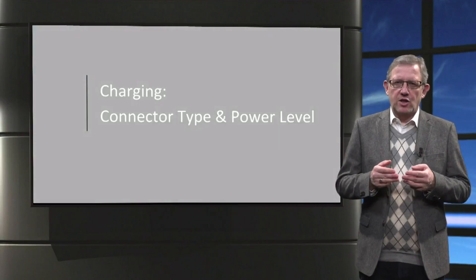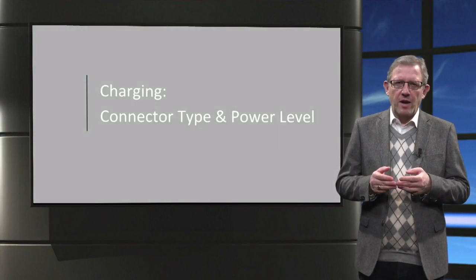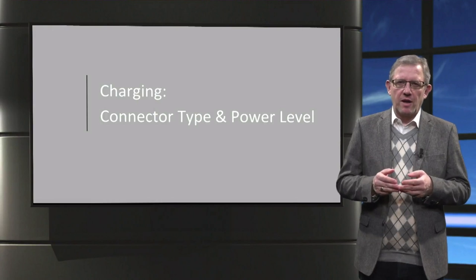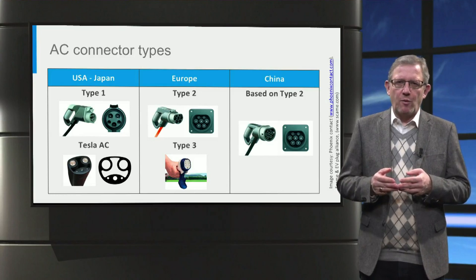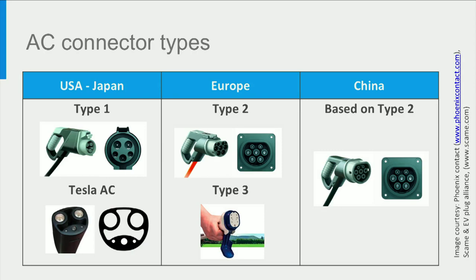AC and DC charging are characterized by the connector type and the charging power levels that can be reached. For AC charging, the Type 1 connector is commonly used in the United States and Japan, while Type 2 and the less common Type 3 connectors are used in Europe. Tesla uses its proprietary connector in the USA and Japan, while it uses the Type 2 connector in Europe. Other parts of the world are often adopting the Type 2 connector as it can work with both 230-volt single-phase and 400-volt three-phase connections.